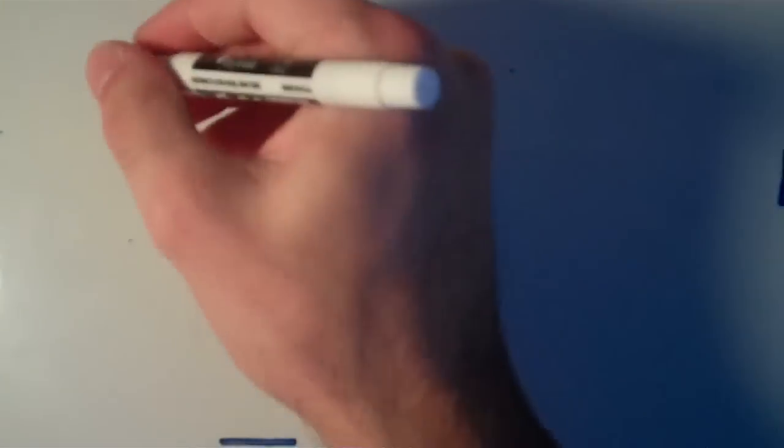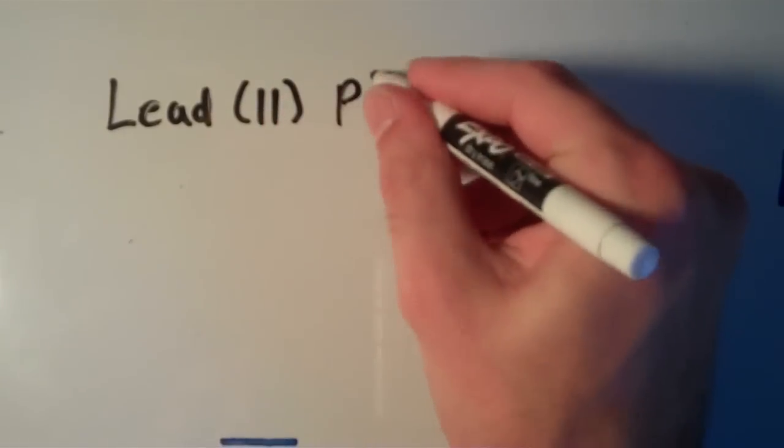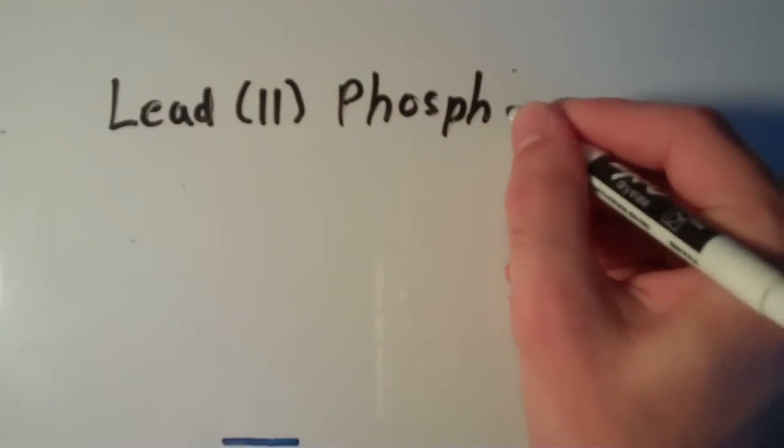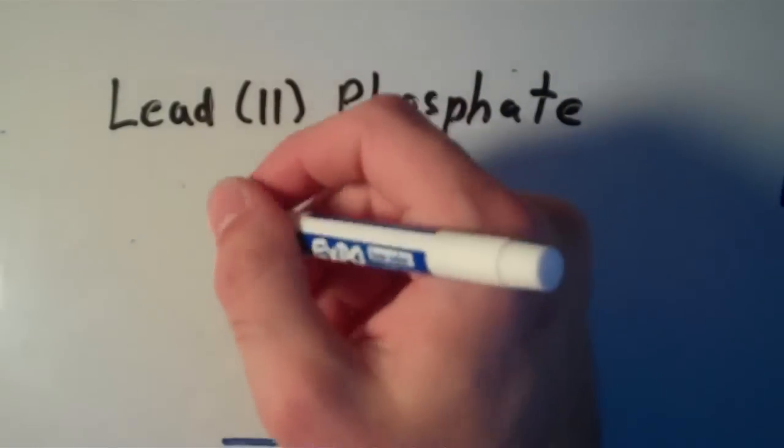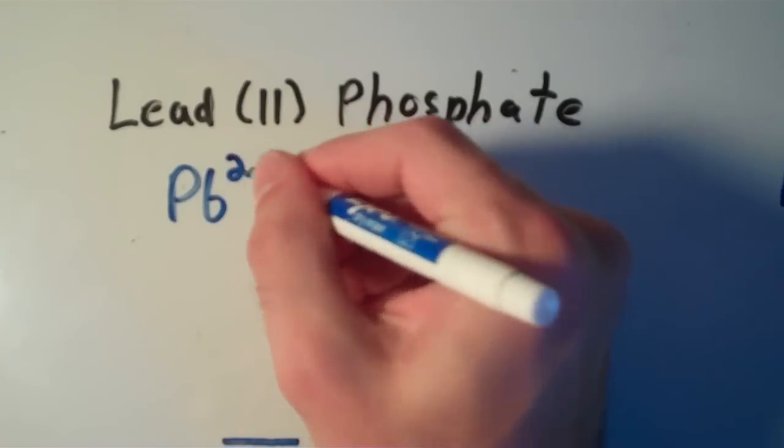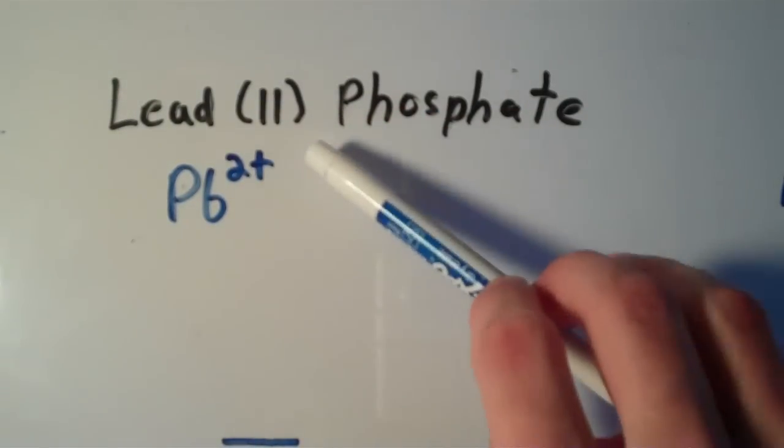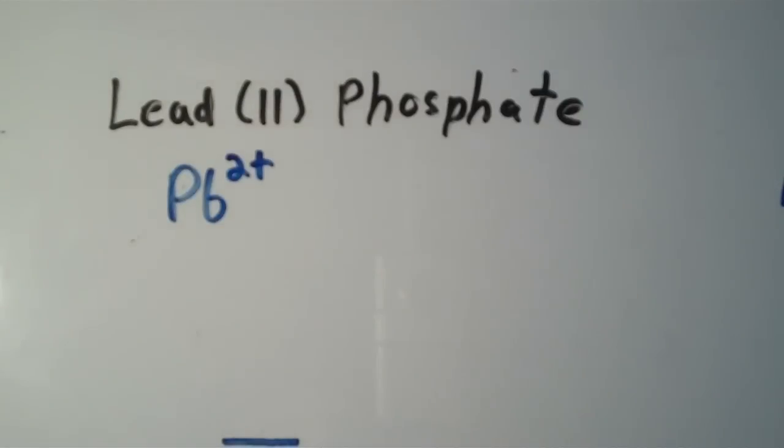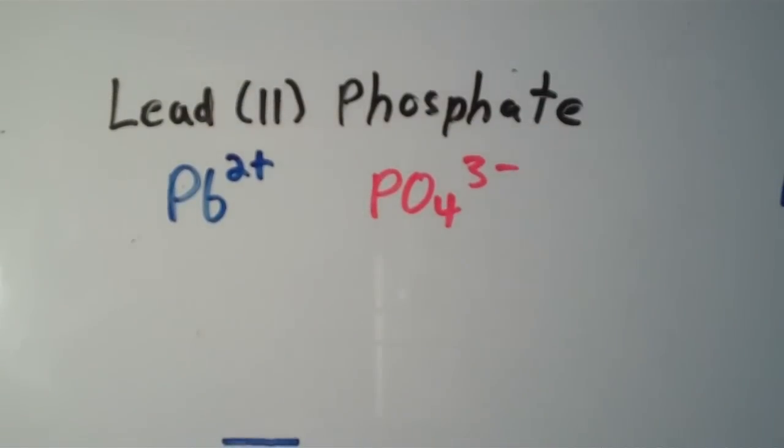Let's do one more. Lead(II) phosphate. Our cation is going to be the lead(II) ion, Pb2+. So although lead can form more than one type of cation, this Roman numeral in parentheses tips you off which one. So it's a Pb2+ ion. And then the formula for our phosphate ion is going to be PO4 3-. Just another one of those common polyatomic anions.